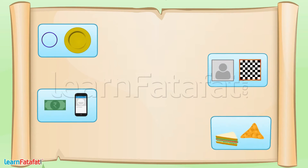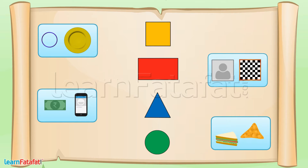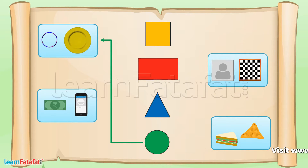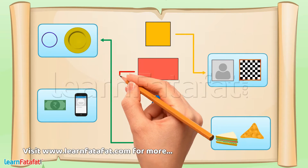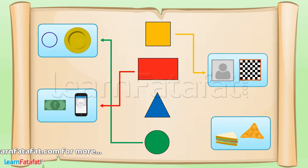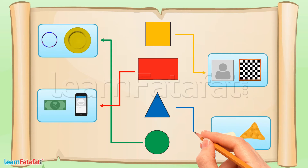See the different objects around us. Can you see these shapes in these objects? Yes, I can see this shape in a bangle and plate. I can see this shape in a photograph and chess board. I can see this shape in a mobile screen and note. I can see this shape in fries and bread.